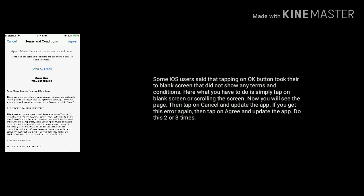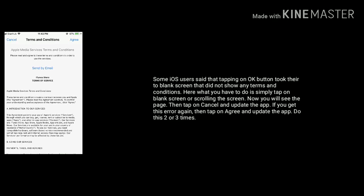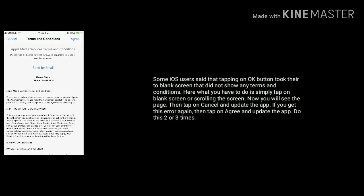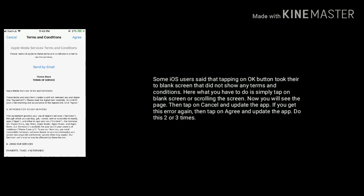Some iOS users said that tapping on the OK button took them to two blank screens that did not show any terms and conditions. Here, what you have to do is simply tap on the blank screen or scroll the screen. Now you will see the page, then tap on cancel and update the app. If you get this error again, then tap on agree and update the app. Do this 2 or 3 times.